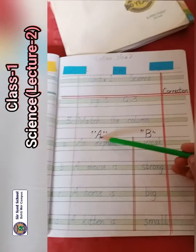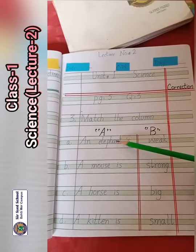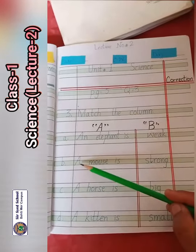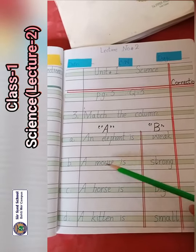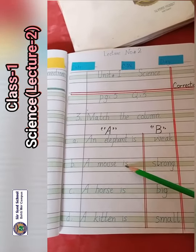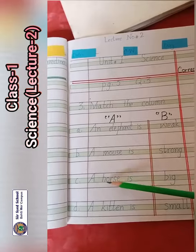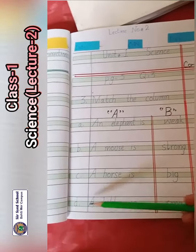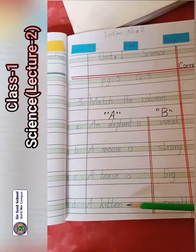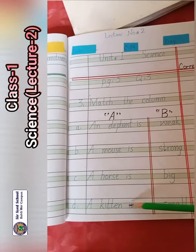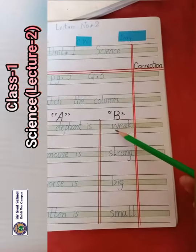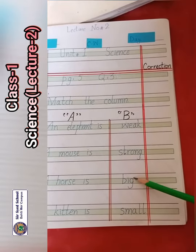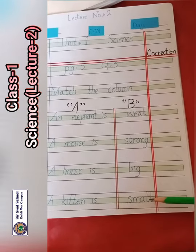In column A: number 1 — an elephant is. E-L-E-P-H-A-N-T, elephant. Number 2 — a mouse is. M-O-U-S-E, mouse. Number 3 — a horse is. H-O-R-S-E, horse. Number 4 — a kitten is. K-I-T-T-E-N, kitten. In column B there are the words: W-E-A-K — weak; S-T-R-O-N-G — strong; B-I-G — big; S-M-A-L-L — small.